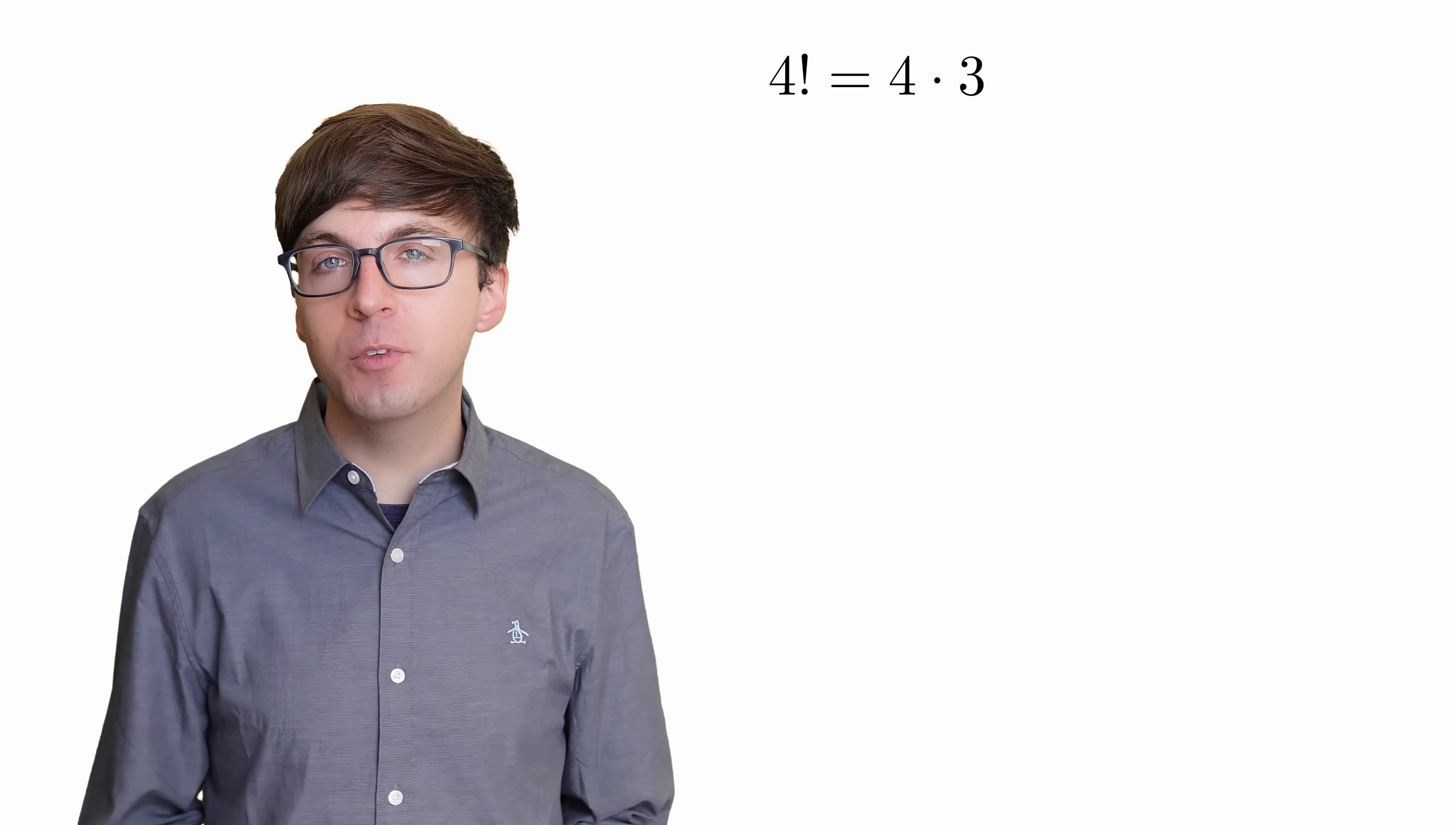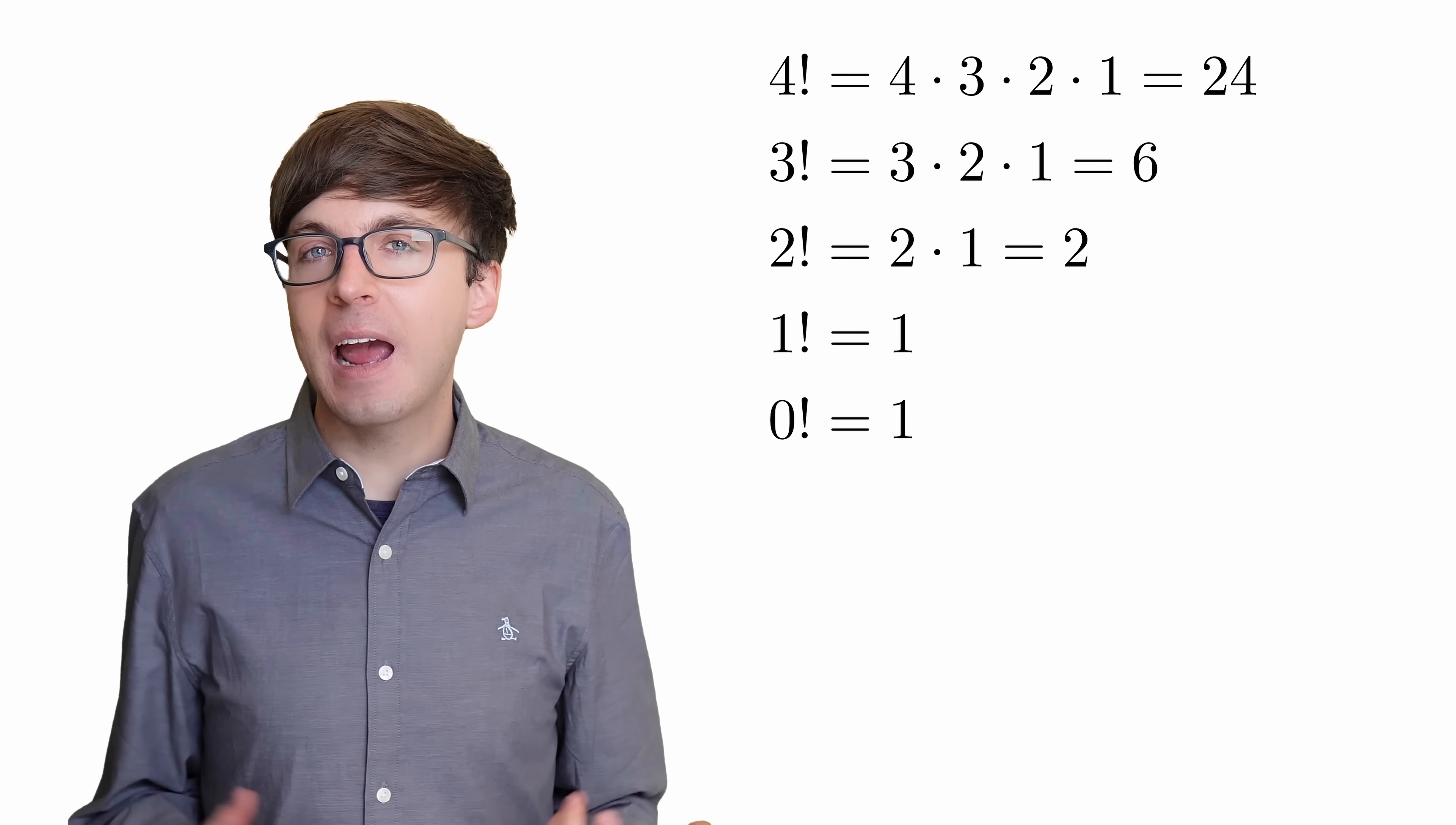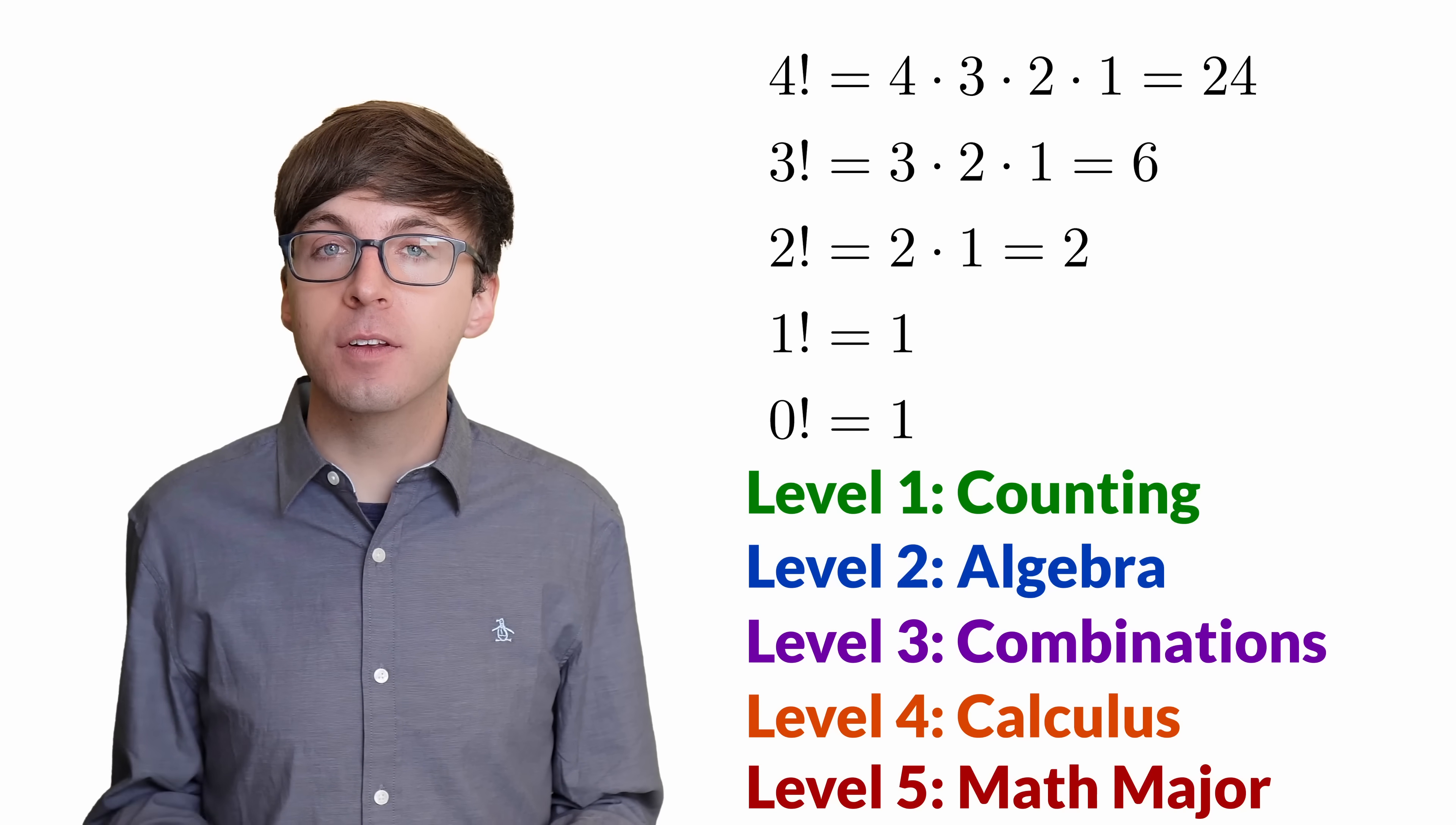4 factorial equals 4 times 3 times 2 times 1, and it works the same way for other positive integers. But what is 0 factorial? Many of us might first guess that it should be 0, but actually we define it to be 1. Let's see why this definition makes sense in 5 different levels, ranging from a quick counting argument to explanations from calculus and beyond.